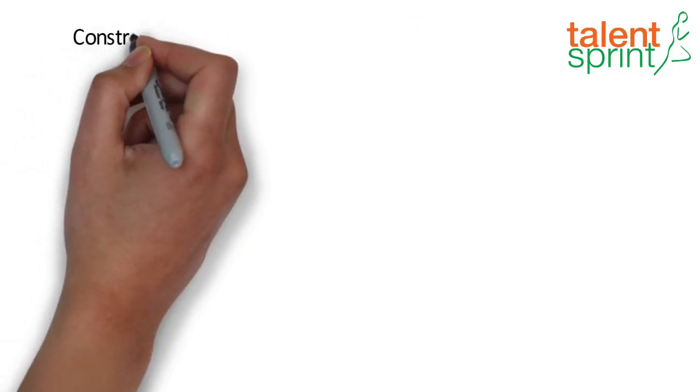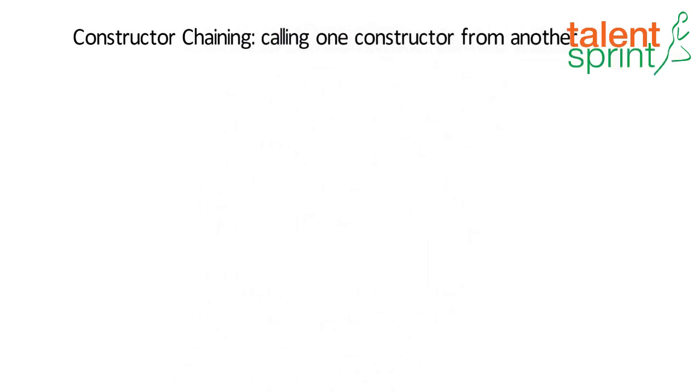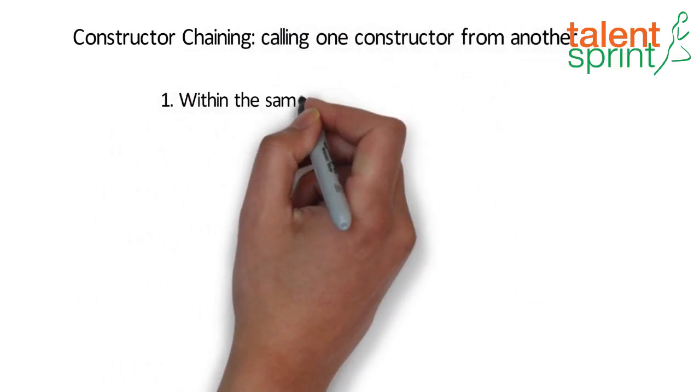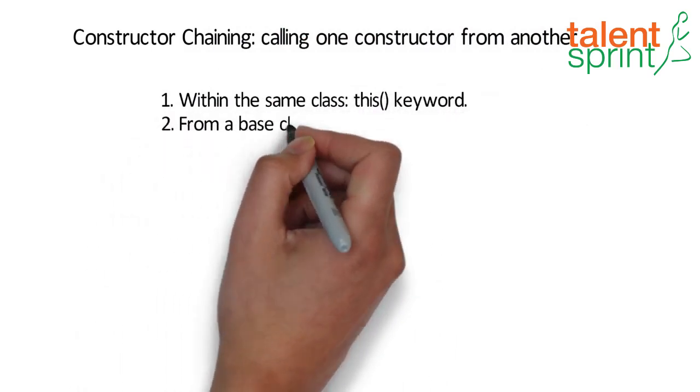Constructor chaining is the process of calling one constructor from another and it can be done in two ways. First, within the same class, it can be done using this keyword. And secondly, from a base class, it can be achieved by using super keyword.